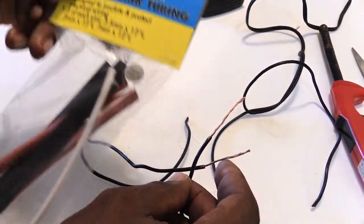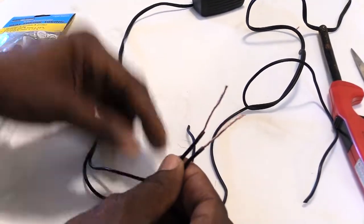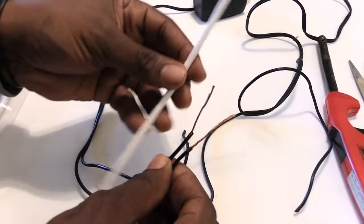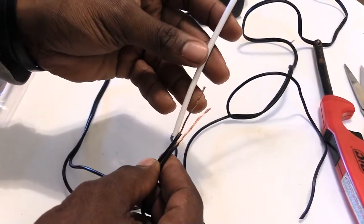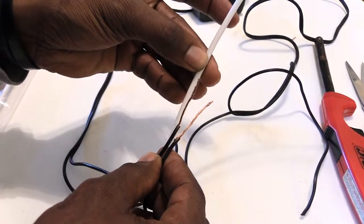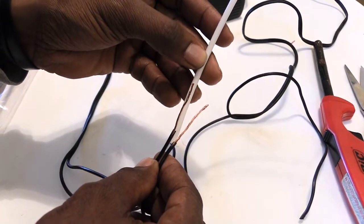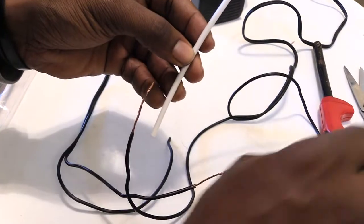First thing I want to do is take these two wires. I'm going to take my heat shrink tubing and measure it out, probably about this much to cover up this connection.